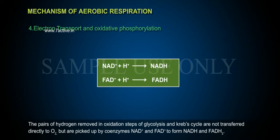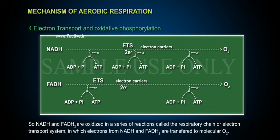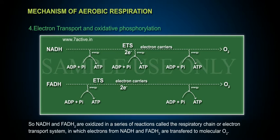The pair of hydrogen removed in oxidation steps of glycolysis and the Krebs cycle are not transferred directly to O2, but are picked up by coenzymes NAD⁺ and FAD to form NADH and FADH2. NADH and FADH2 are then oxidized in a series of reactions called the respiratory chain or electron transport system, in which electrons from NADH and FADH2 are transferred to molecular O2.